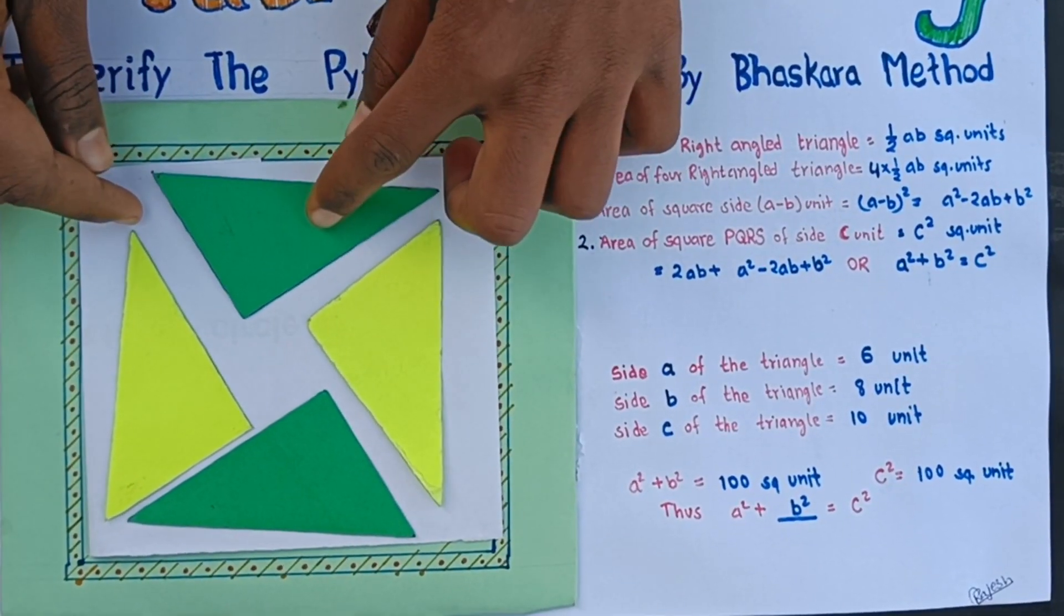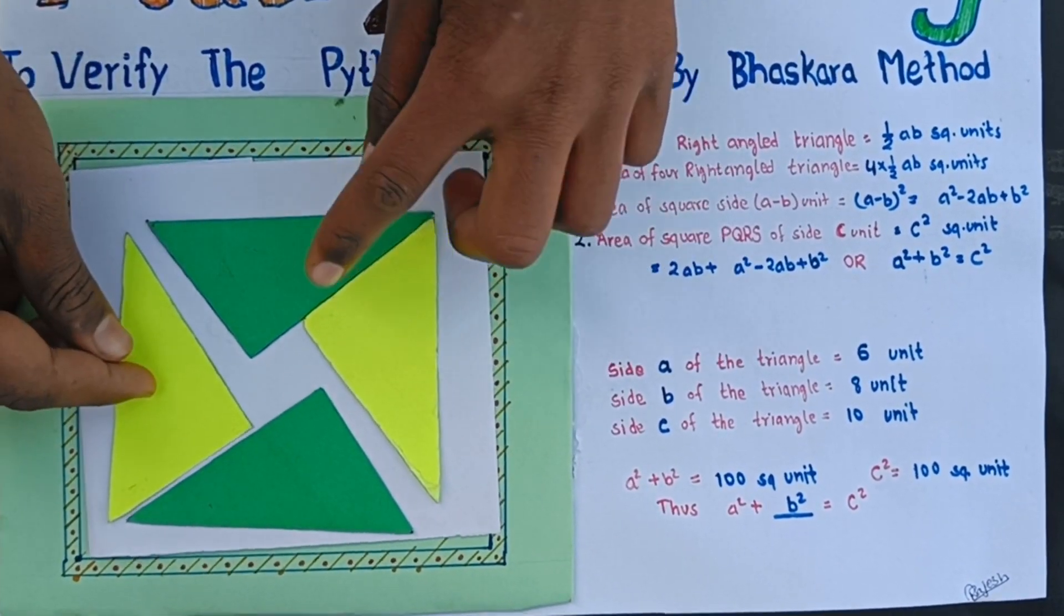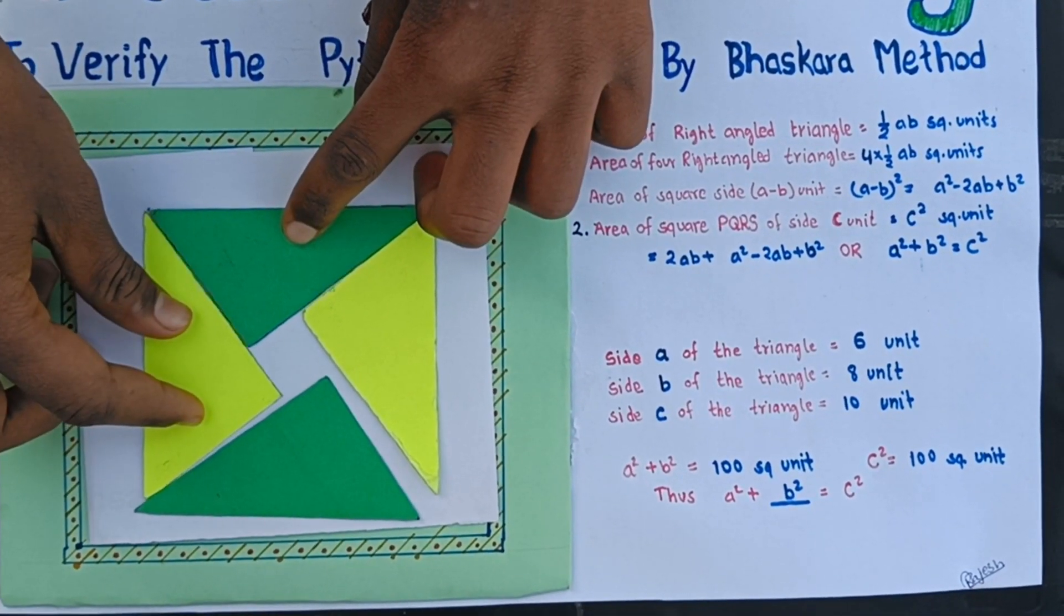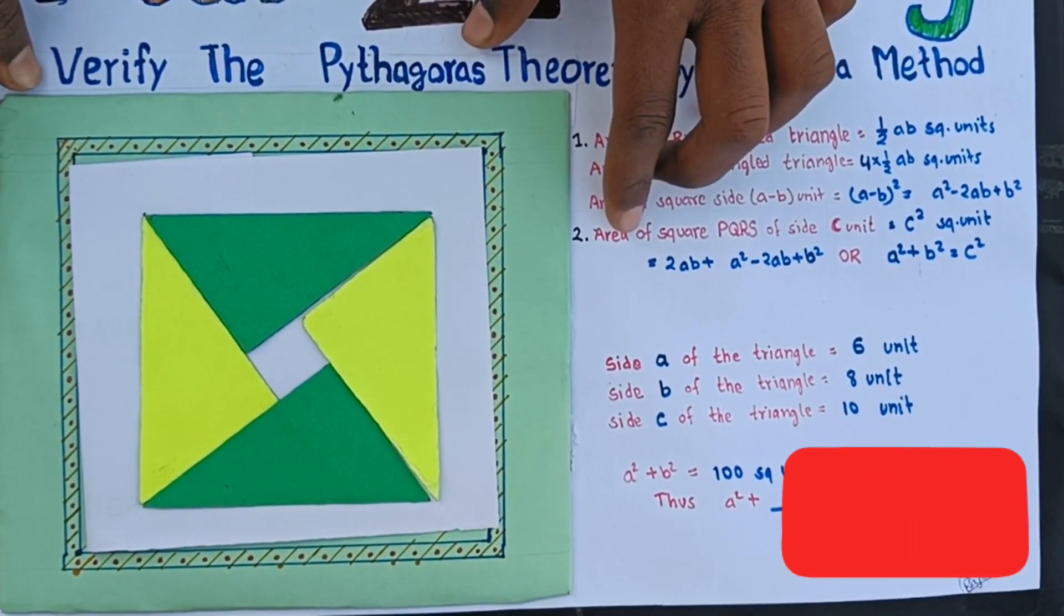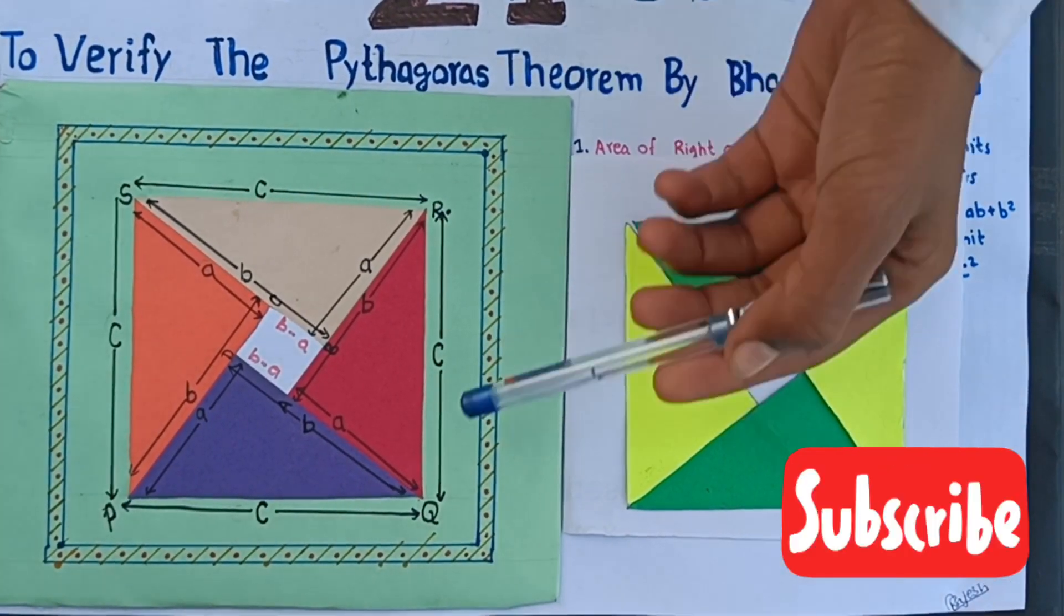Now we arrange four right-angled triangles in such a manner that they form a square. The side of this square is C unit.